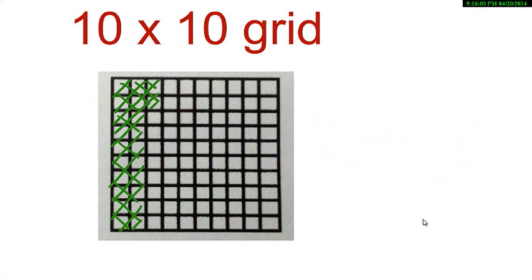Can you identify the decimal in this picture? I have colored 22 squares, so my decimal is 22 by 100, that is 0.22.